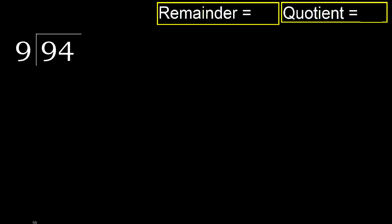94 divided by 9. 9 is not less, therefore work with 9. 9 multiplied by which number is nearest to 9 but not greater?